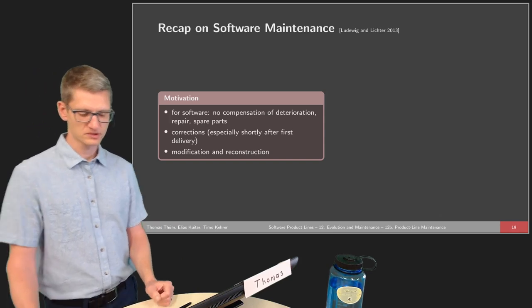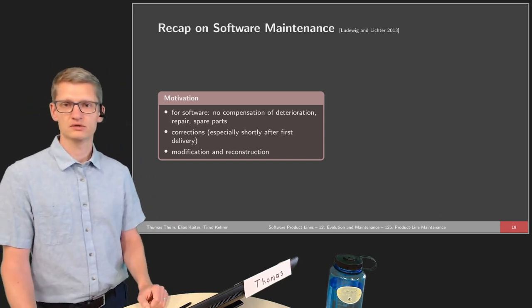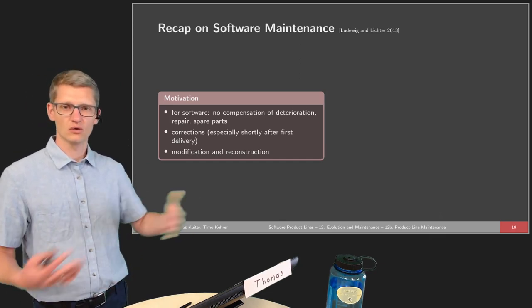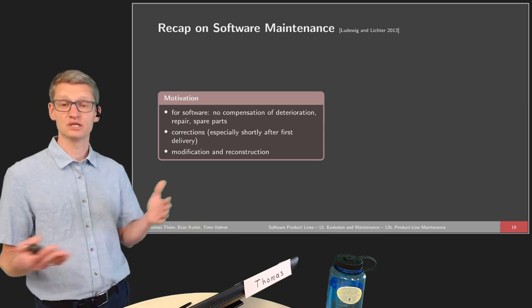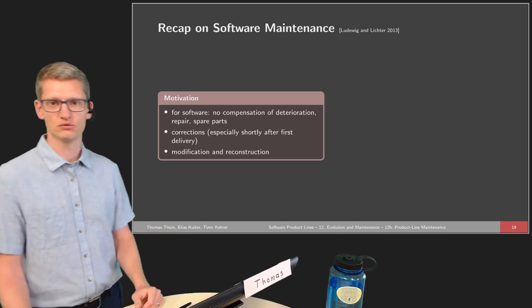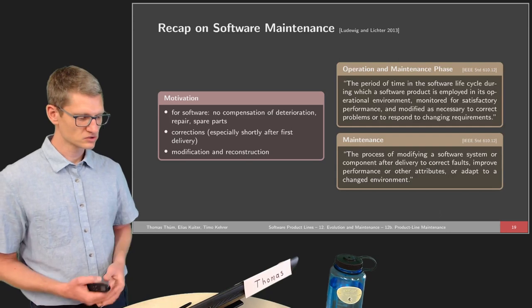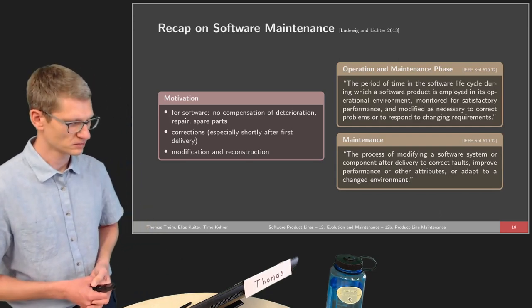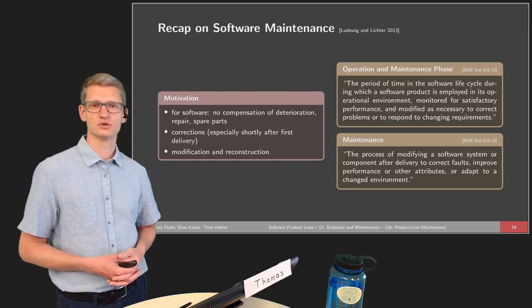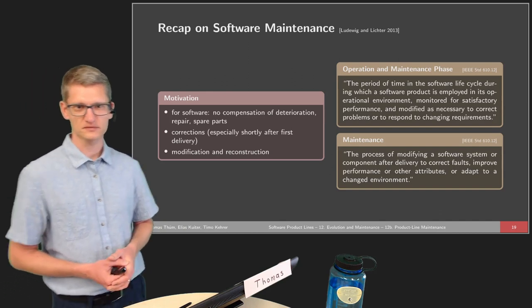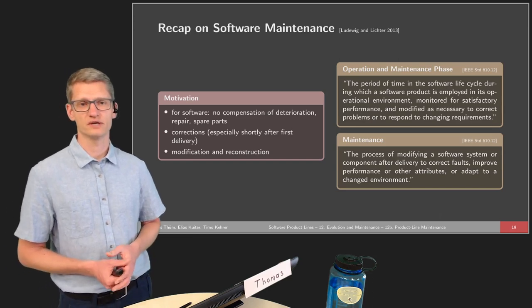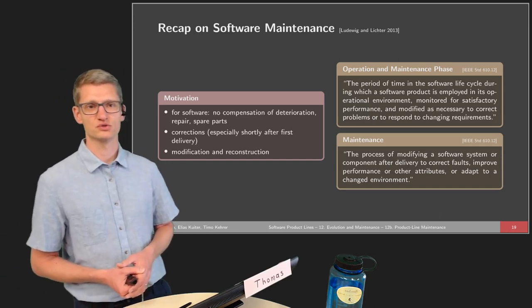Part of this also happens during modification or reconstruction, because in order to maintain software and make it work all the time, sometimes we need to restructure and make changes even though there were no faults in the original software. One definition covers the operations and maintenance phase: the period of time in the software lifecycle during which the software product is employed in its operational environment, monitored for satisfactory performance, and modified as necessary to correct problems or respond to changing requirements.